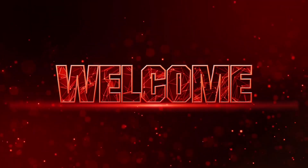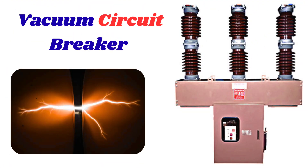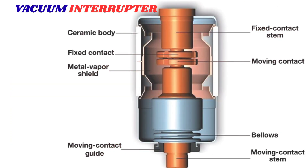Vacuum circuit breakers, VCBs, are a type of electrical circuit breaker that uses vacuum interrupters to extinguish electrical arcs when a circuit is broken. VCBs are designed to interrupt electrical circuits under both normal and fault conditions, ensuring the safety of electrical equipment and personnel. They consist of a vacuum interrupter, which is the core component responsible for arc extinction, and an operating mechanism that controls the movement of the contacts.